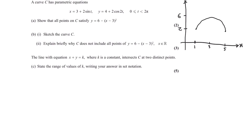In this final part of the question — the hardest part — we are told that the line with equation x plus y equals k, where k is a constant, intersects C at two distinct points. Immediately when I see two distinct points, I think of discriminants. In particular, b squared minus 4ac will be greater than 0 because we have two roots. We are told to find the range of values of k, giving our answer in set notation form.